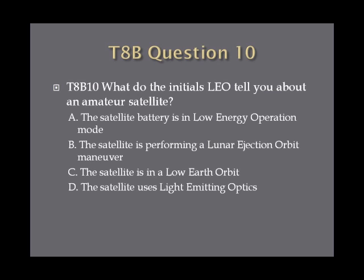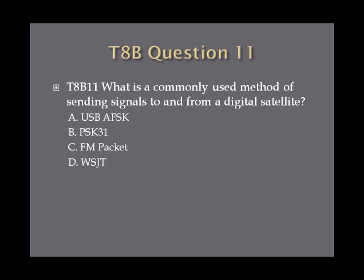Question 10: What do the initials LEO tell you about an amateur satellite? A. The satellite battery is in low energy operation mode? B. The satellite is performing a lunar ejection orbit maneuver? C. The satellite is in a low Earth orbit? Or D. The satellite uses light emitting optics? Question 11: What is a commonly used method of sending signals to and from a digital satellite? A. USB AFSK? B. PSK-31? C. FM packet? Or D. WSJT?